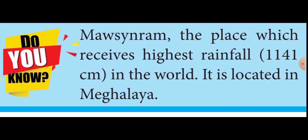The western part of Rajasthan is called the Thar Desert because less than 50 centimeters of rainfall is received there. All other areas receive between 100 to 200 centimeters of rainfall.